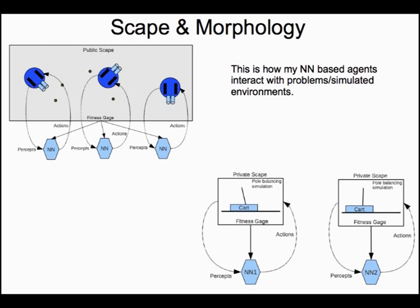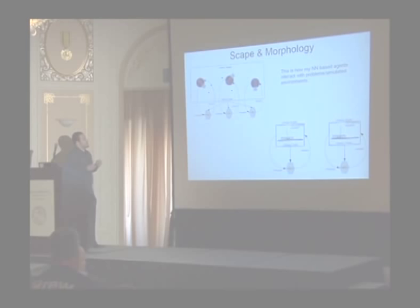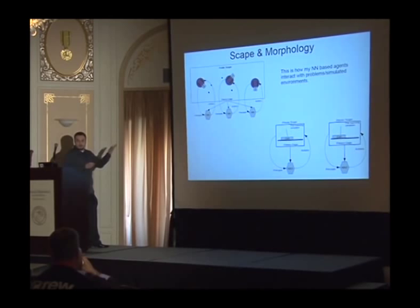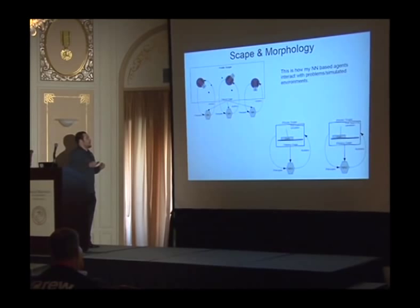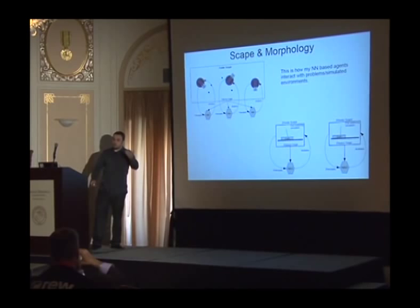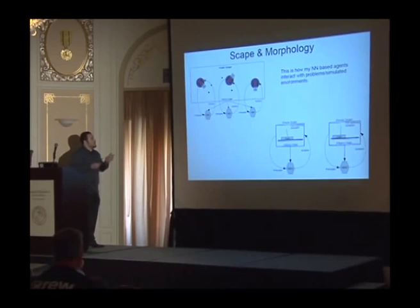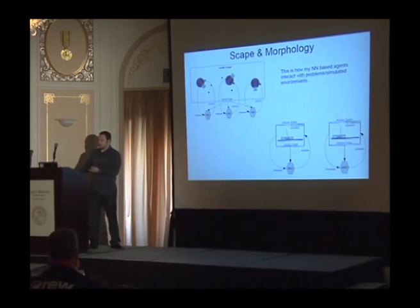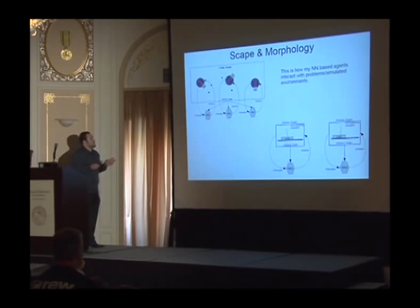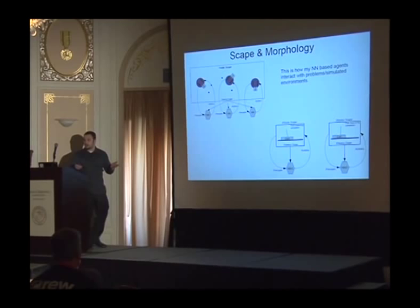Scapes are the way you present a particular problem to the neural network-based agent in my system. A scape is a self-contained simulation environment — a self-contained process that can even be on a different machine. The scape accepts sensor requests from the neural network agents and accepts actuator signals from the neural network to do something within the environment. For example, in an artificial life experiment, the sensors send sensor requests, the scape creates the avatar and returns what the robot sees, the neural network processes it and sends actions through actuators to control differential drive. If any of you used Gazebo or ROS, you can put scapes on different machines.